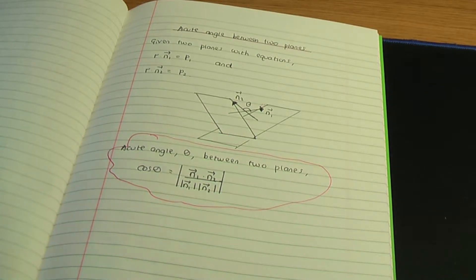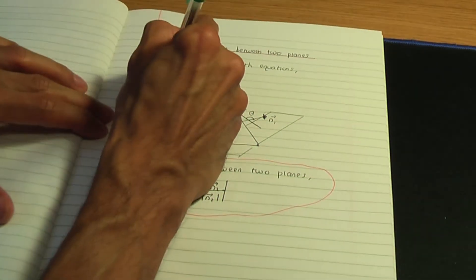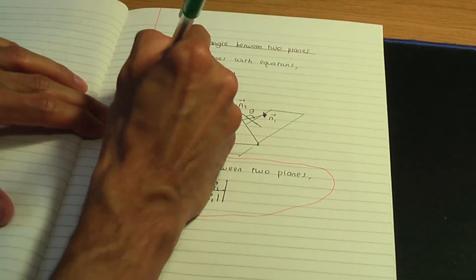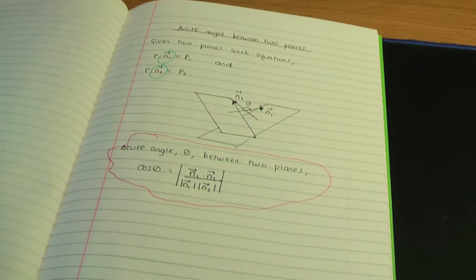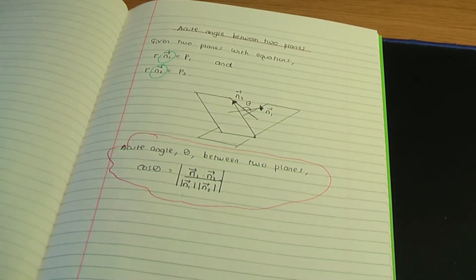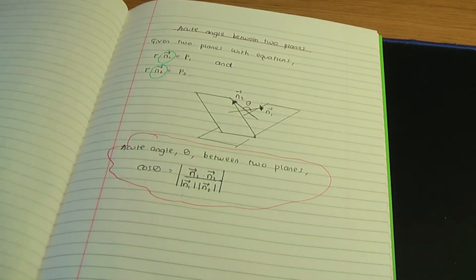As you can see from the formula, it only depends on n1 and n2 — that is, it only depends on the normal vectors of the planes. It's independent of the scalars P1 and P2, only dependent on the normal vectors, highlighted in green.